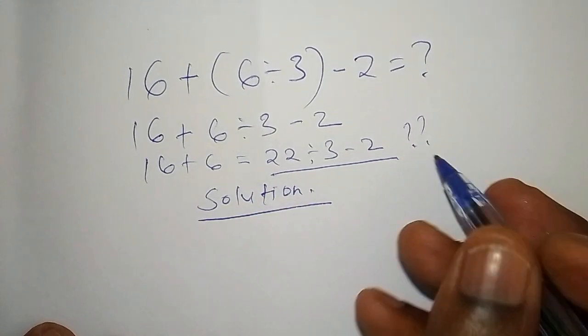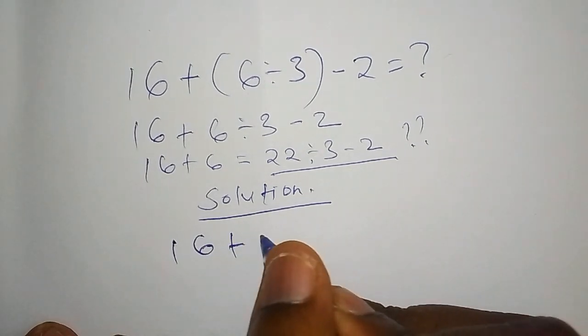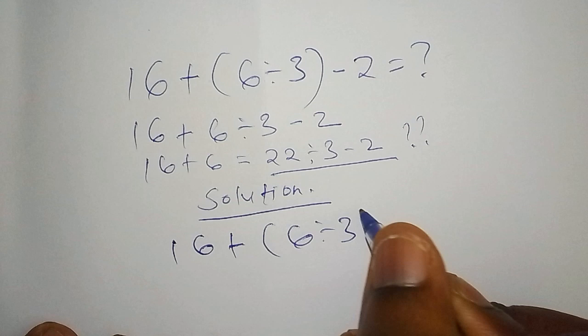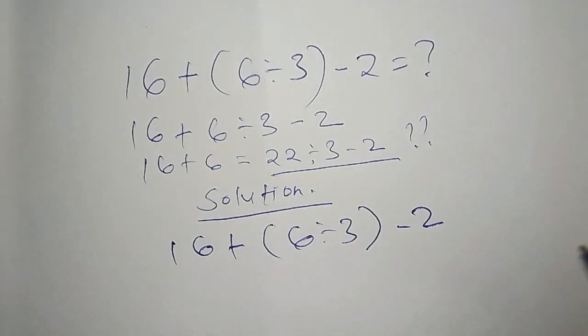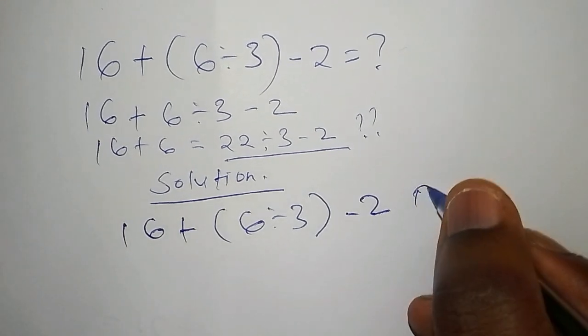This will take just a few seconds. We have 16 + (6 ÷ 3) - 2. The best method we're going to use is the BODMAS rule. We must always follow the BODMAS rule when working out this problem.